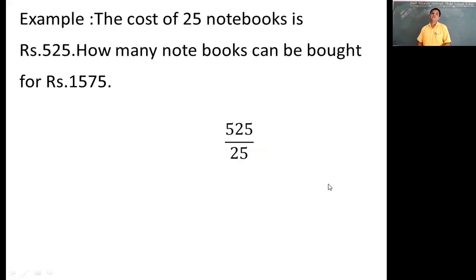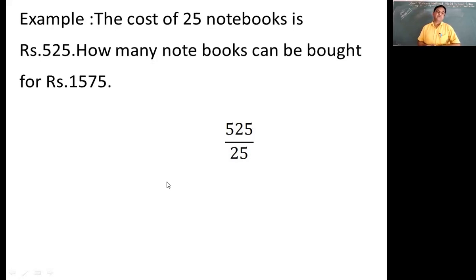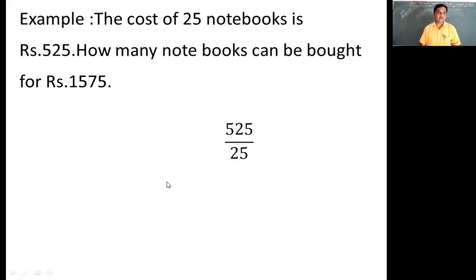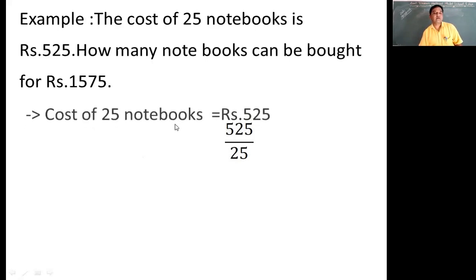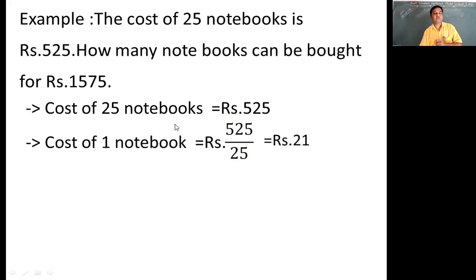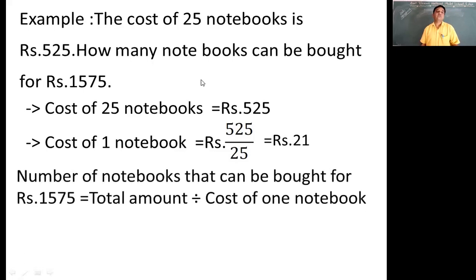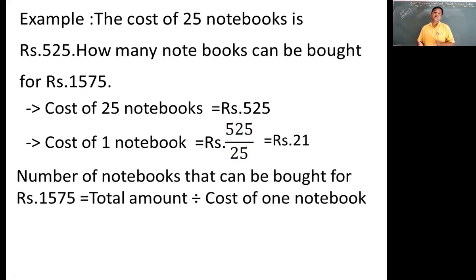One more example: the cost of 25 notebooks is 525 rupees. How many notebooks can you buy for 1575 rupees? You don't know the cost of one, so first of all we find the cost of one notebook by dividing 525 by 25, the number of notebooks. We get the cost of one notebook as 21 rupees. Once we have the cost of one notebook, we can find how many notebooks can be bought for 1575 rupees by dividing that amount by the cost of one.